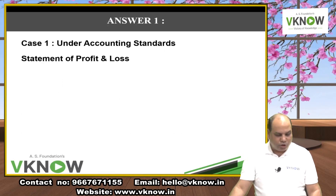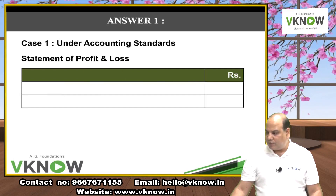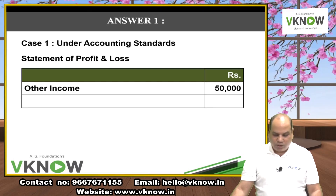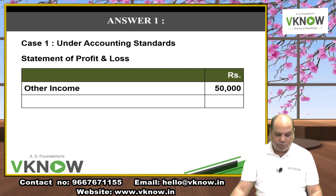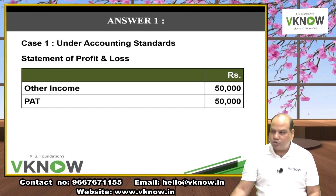Under AS, prepare Statement of P&L: profit after tax ₹50,000. Then Balance Sheet (Schedule 3 Division 1 format — equity and liabilities on top): Share Capital ₹10 lakh, Retained Earnings ₹50,000, Revaluation Reserve ₹1 lakh. Total equity side: ₹11,50,000. Assets: Property, Plant & Equipment ₹11 lakh, Cash ₹50,000. Total assets: ₹11,50,000. Balance sheet tallies.